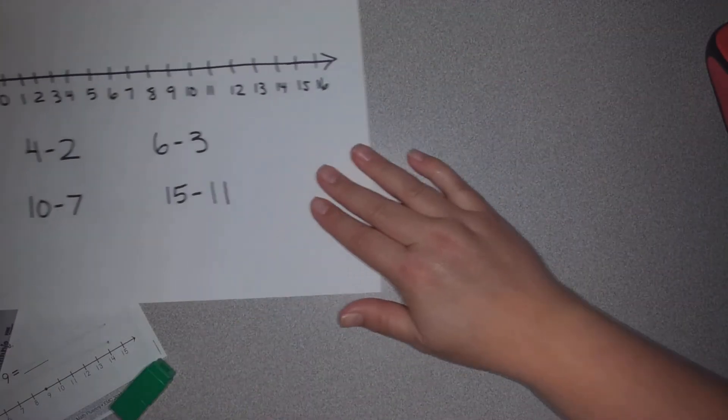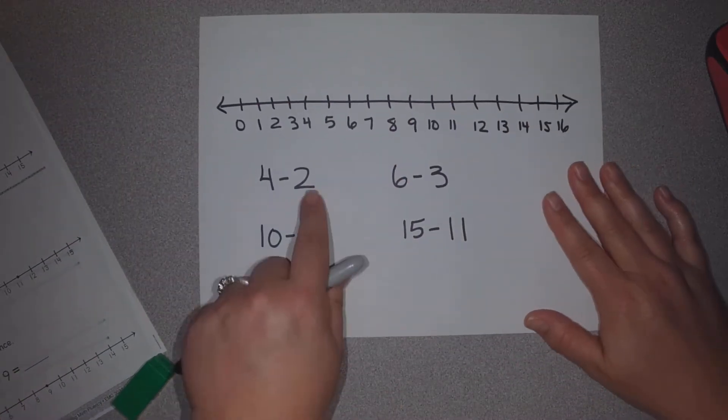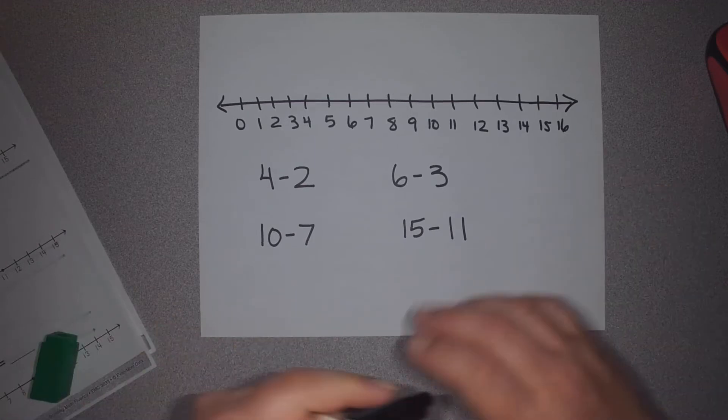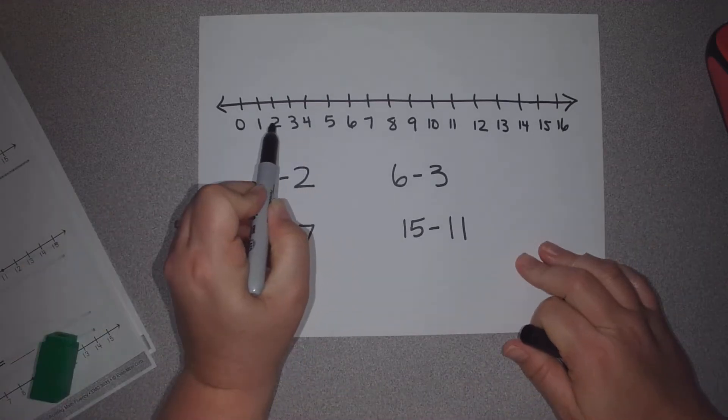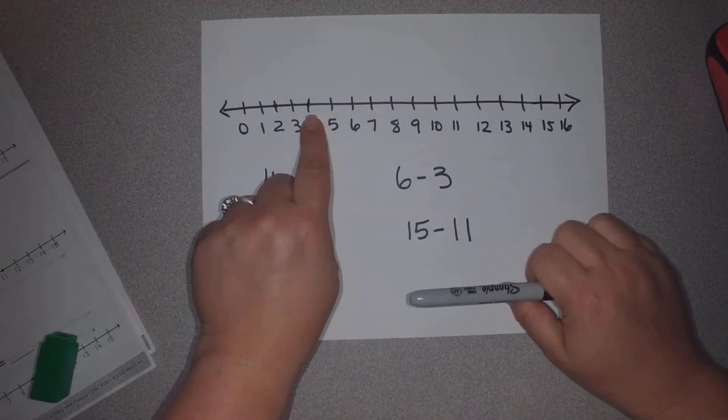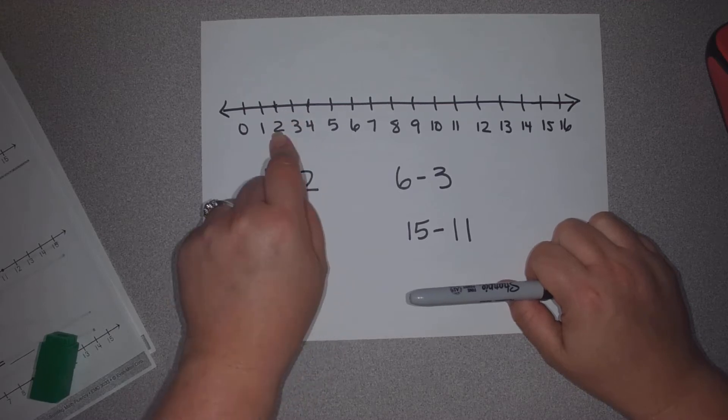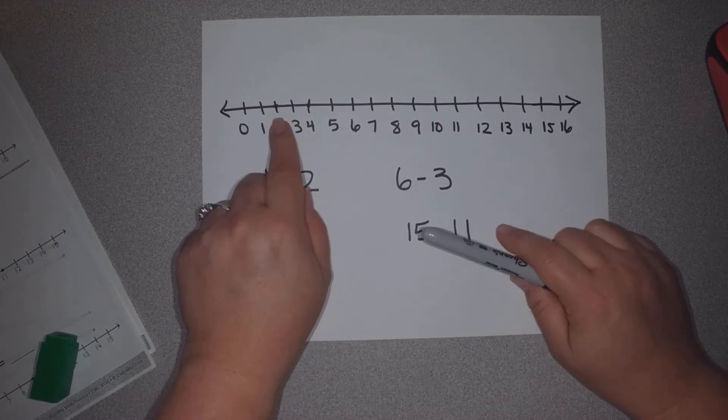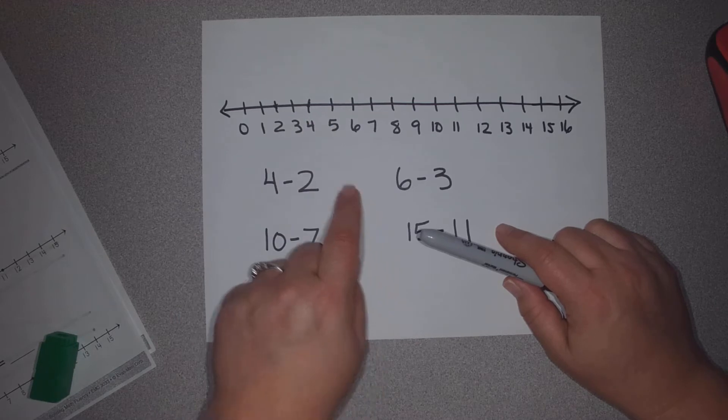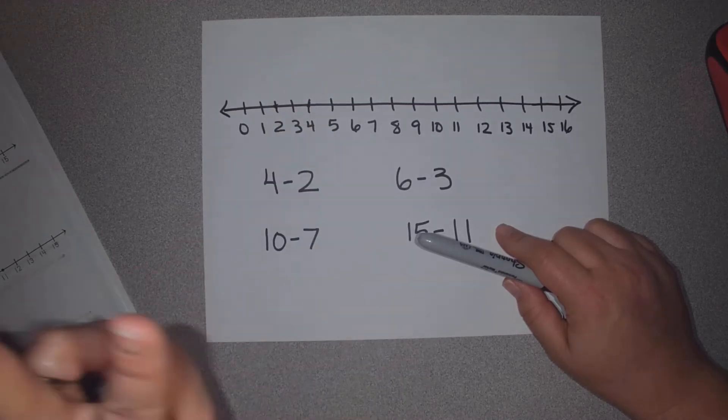Okay, let's look at the difference of these two numbers on the number line. The first one is 4 minus 2. We have 4 and we have 2. Here's where they are on the number line. We want to know the difference. And sometimes instead of counting back, it's a little easier to count forward. So we count up. We take the small number and we just count up to find the difference. 2, 3, 4. The difference is 2.